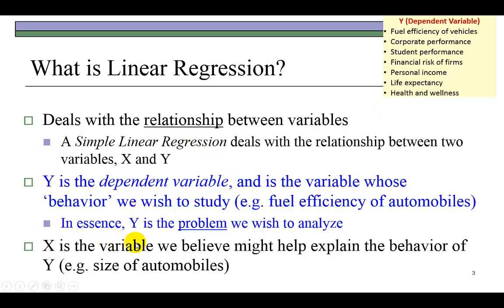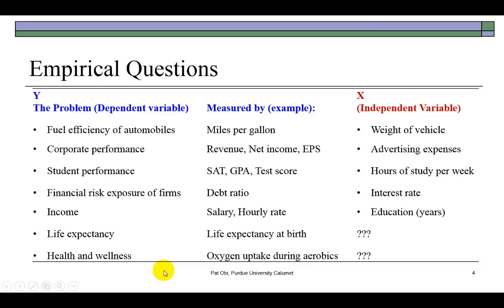X, on the other hand, is the variable we believe might help us explain the behavior of Y. Therefore, X is the independent variable, the explanatory variable. In the case of fuel efficiency of cars, the explanatory variable might be the size or weight of automobiles. I show some examples here where the weight of the vehicle would serve as the explanatory variable for fuel efficiency. For corporate performance, you might consider advertising expenses because you probably believe that the more money you spend advertising, the greater would be the demand and therefore the firm's performance would improve.